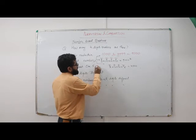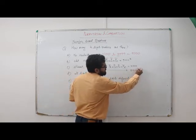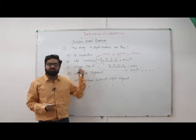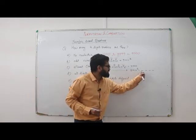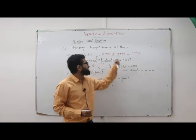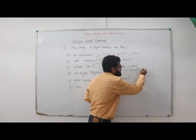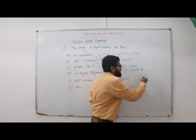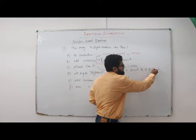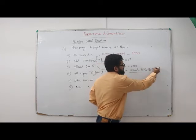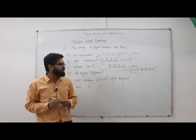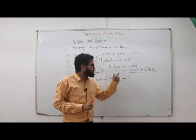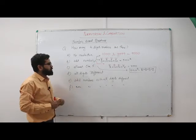Total cases are 9 × 10³. For numbers with no five: at the thousands place we earlier had 9 choices (1–9), now we remove 5, leaving 8 choices. At each of the other three places we had 10 choices, now we remove 5, leaving 9 choices each. So the answer is 9000 minus 8 × 9³.